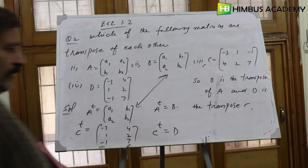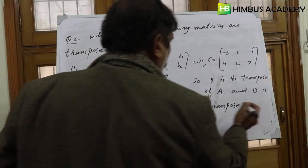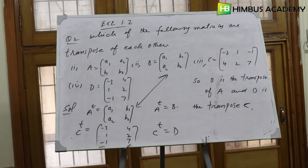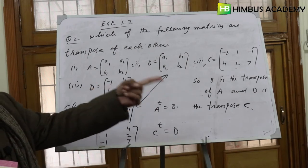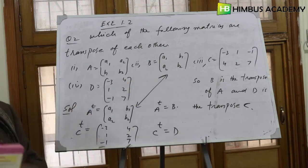In short, matrix B is the transpose of matrix A - we have proven this. And matrix D is the transpose of matrix C. This is question number 2.